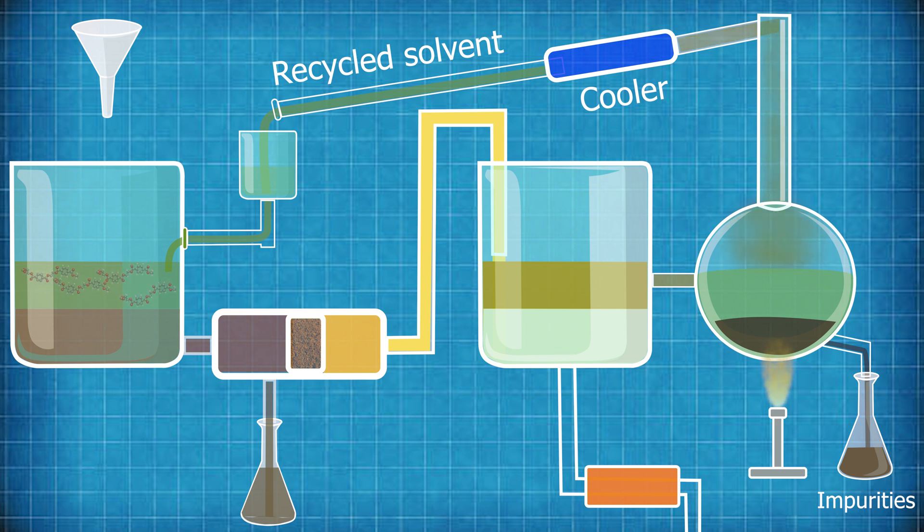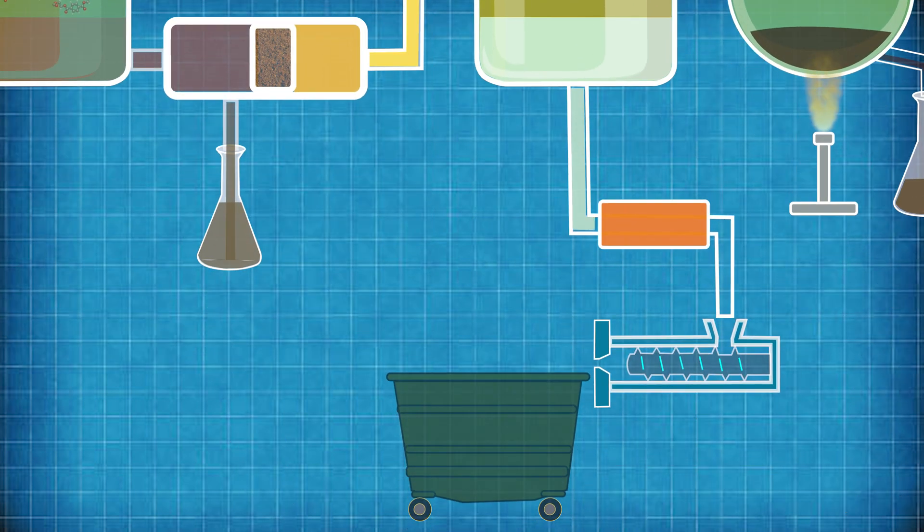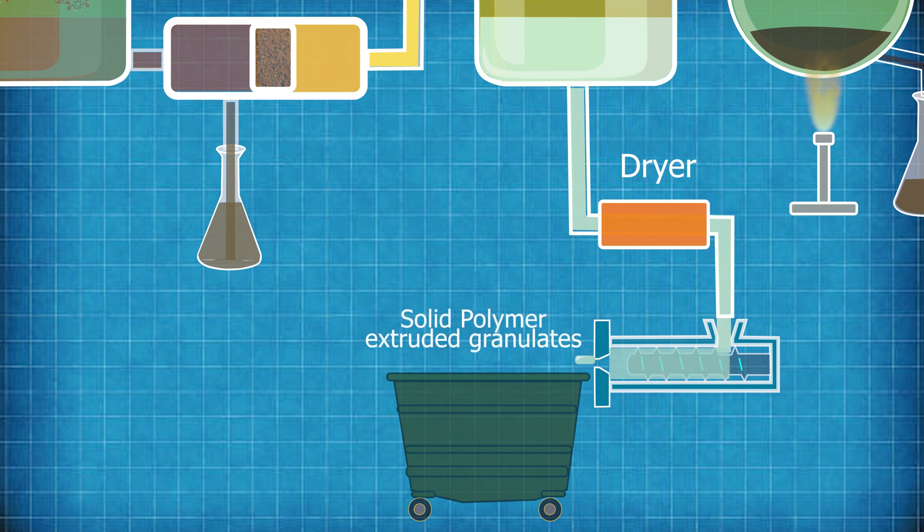The precipitated polymer goes through a dryer and then once it's a solid material again it gets extruded into new granulates with very similar properties to the original virgin material.